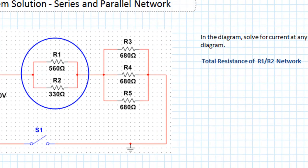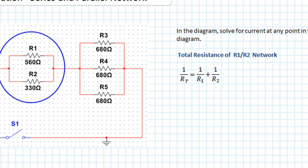We know that for resistors in parallel the formula we need to use is: 1/RT = 1/R1 + 1/R2. So what we're going to do first is substitute those numbers in, giving us 1/RT = 1/560 + 1/330. We can simplify this so that 1/RT = 0.004816.